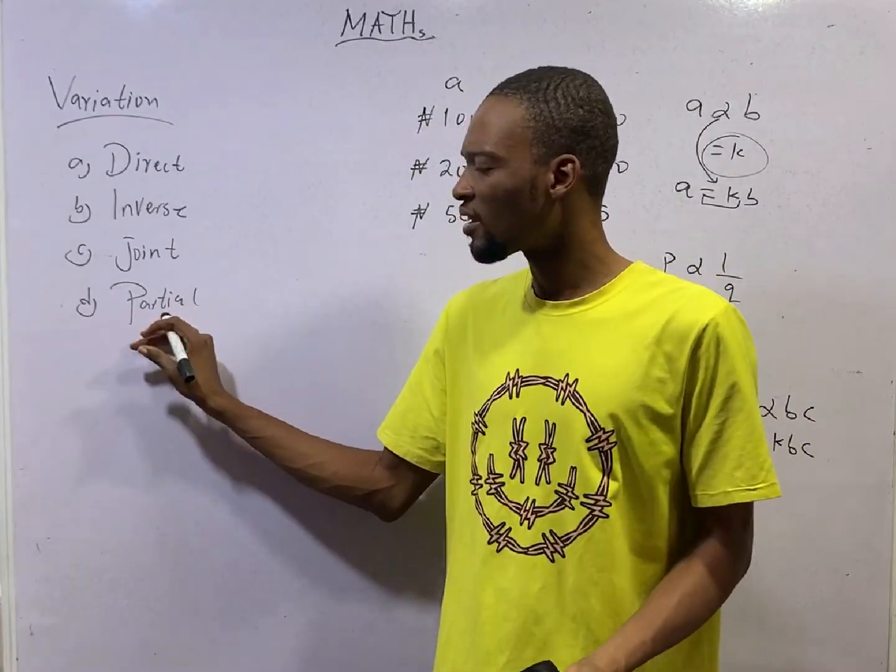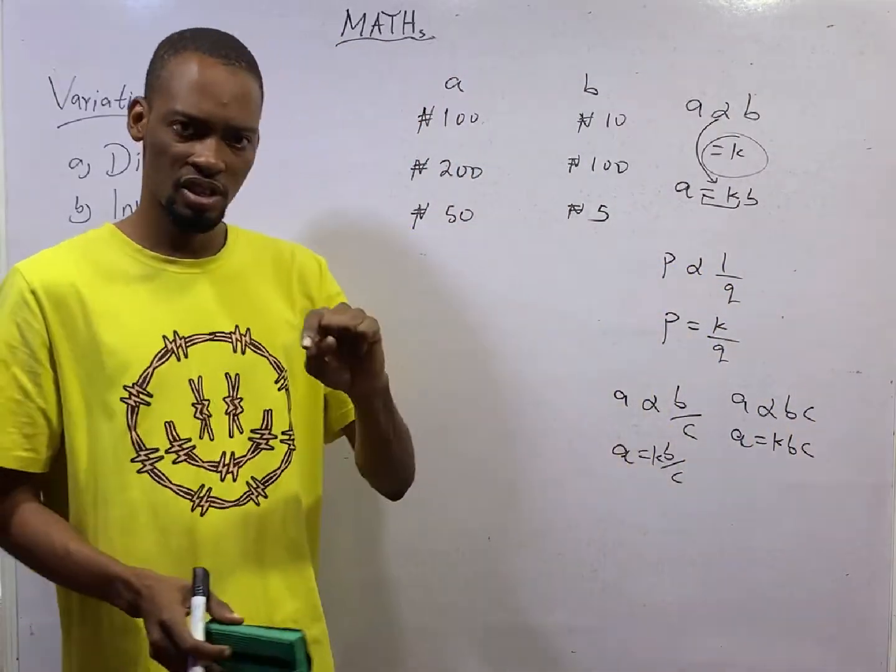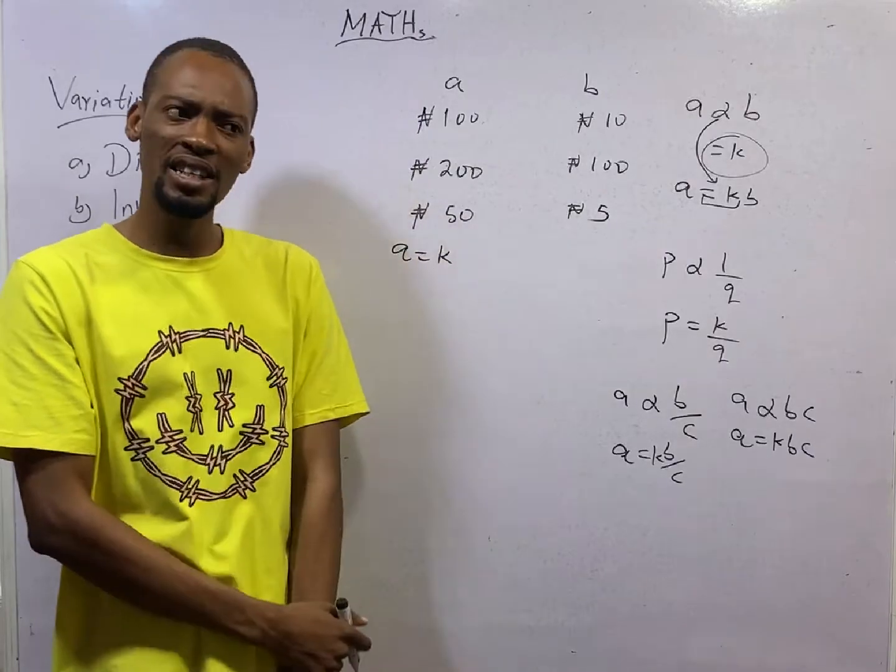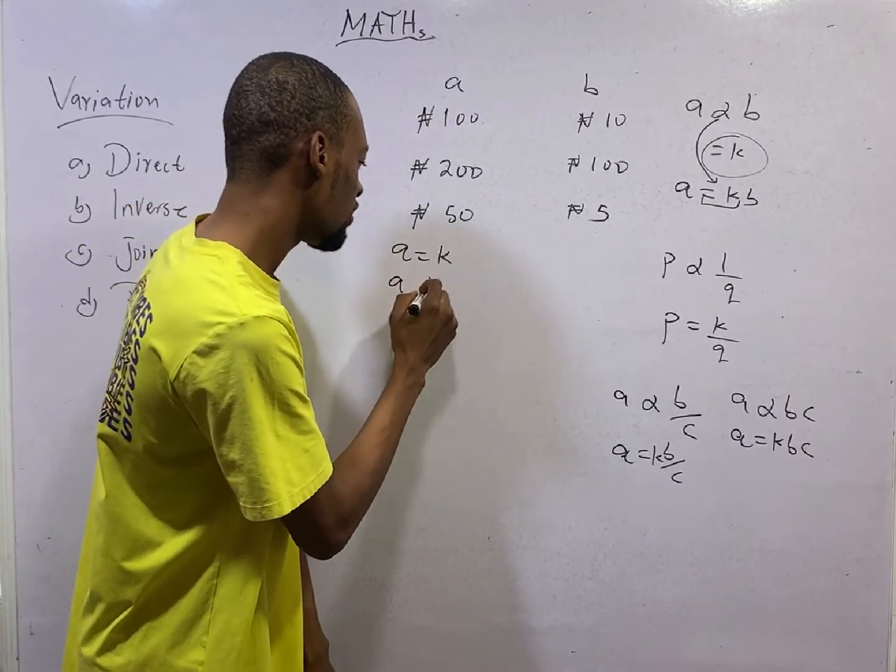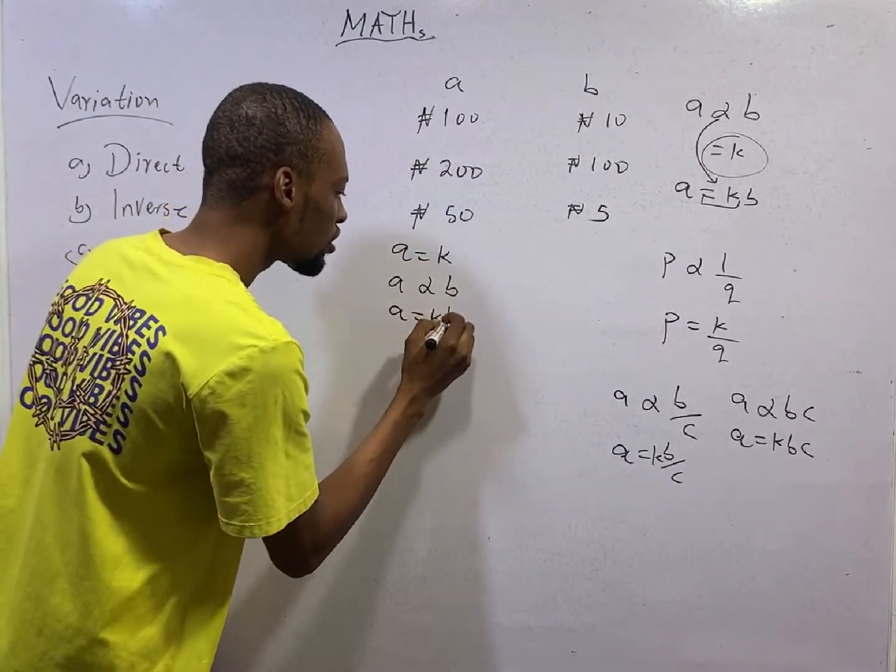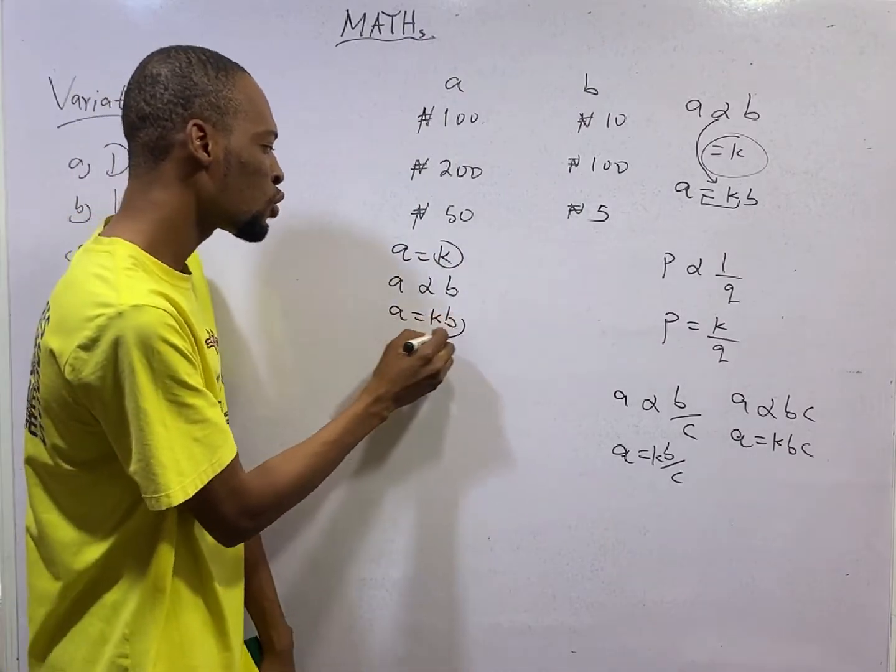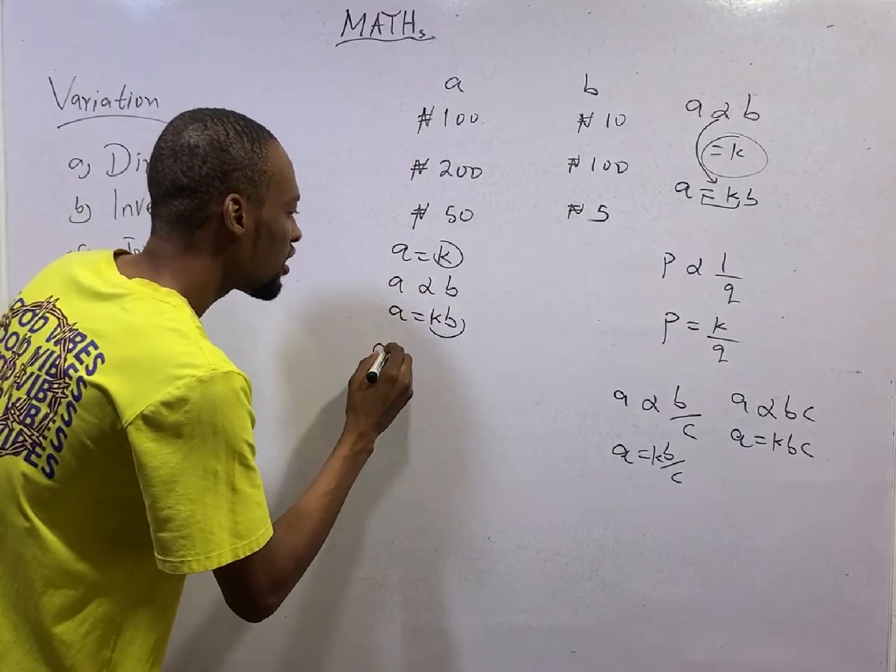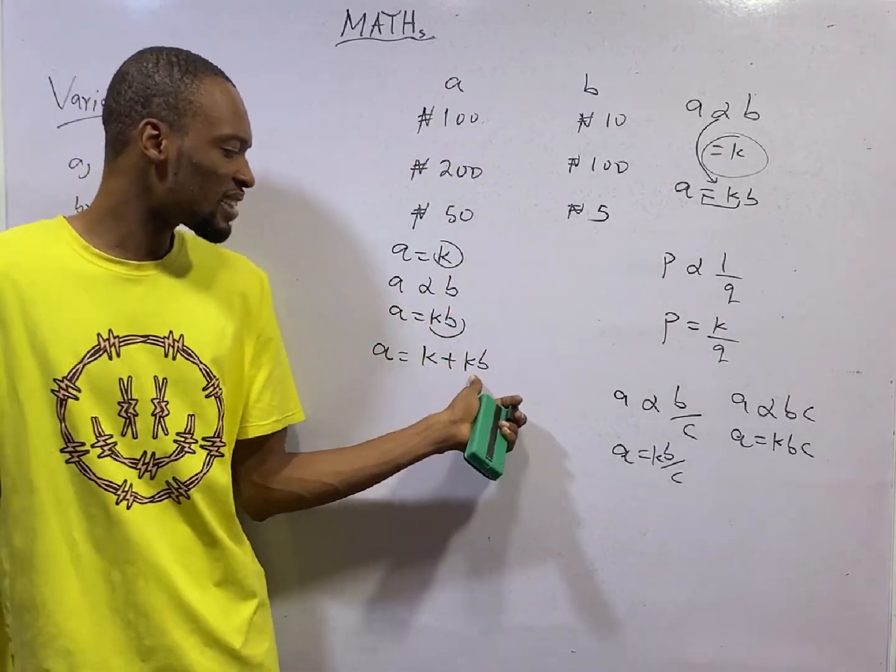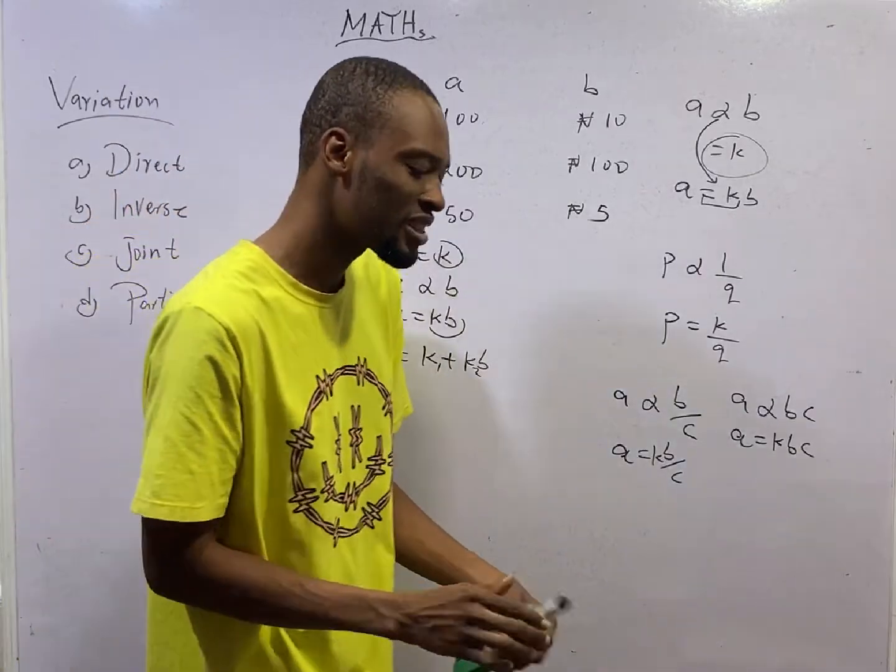How about we see partial variation? Partial variation is a type of variation that most times leads to simultaneous equations. If I say A is partly constant, it means A equals K, and partly varies directly as B. It means A varies directly as B, A equals KB. You ask yourself, it is A that is partly constant and it is the same A that is equals KB. Combining them, you will have A equals K plus KB. That is partial variation for you. But since this is constant and this is another constant, to tell us that the constants are different, you call here K1 and you call here K2.